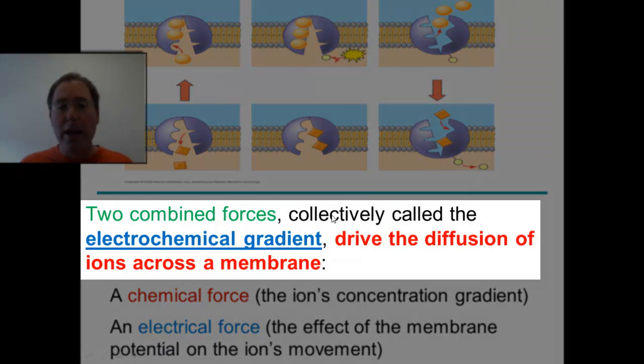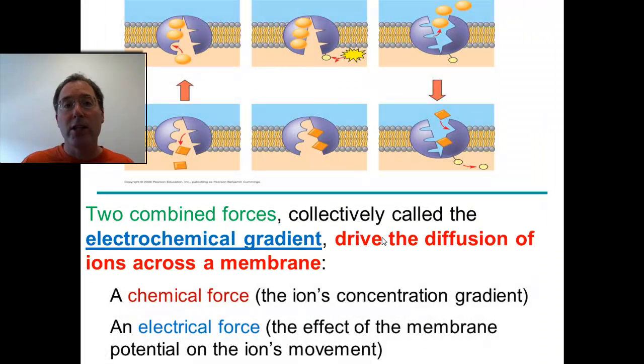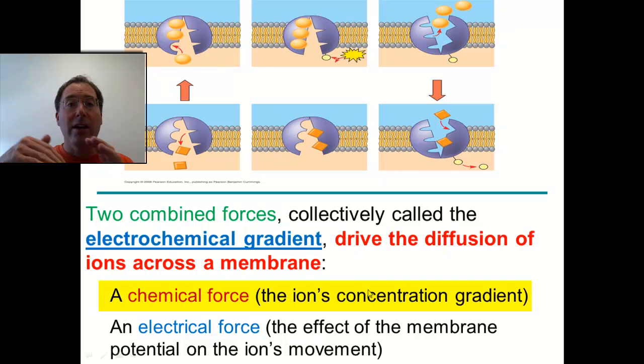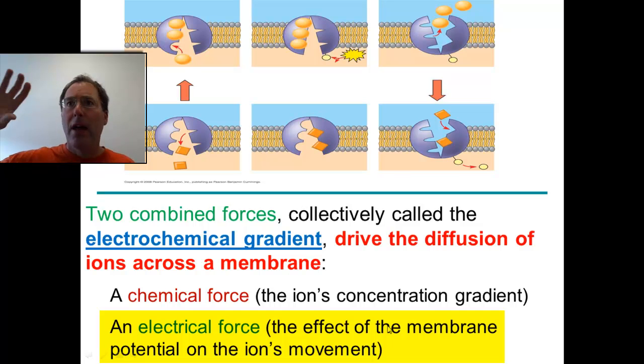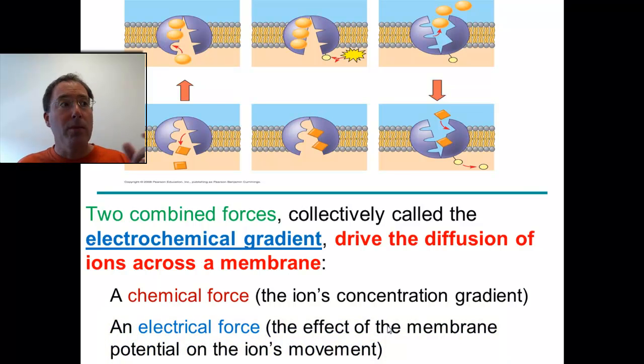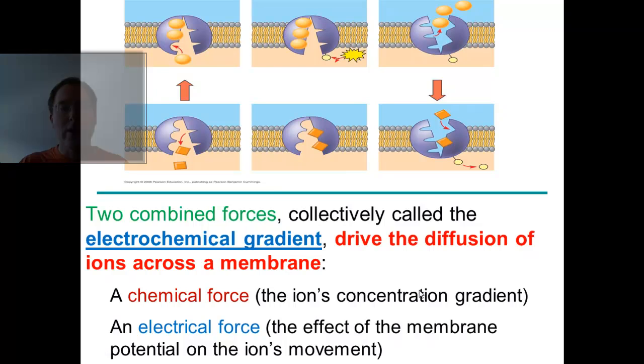As a result, these two combined forces called the electrochemical gradient drive the diffusion back down the concentration gradient of these sodium ions. There's a chemical force, which is the ion's concentration gradient, just going from high to low. And then there's also an electrical force because they all have charges. And this charge is electricity. It's due to more electrons being there or not being there in the case of sodium ions. So those are super important points when it comes to electrochemical gradients.